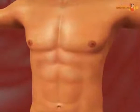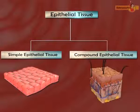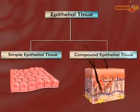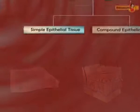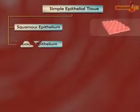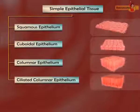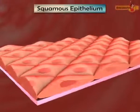Epithelial tissue covers the entire surface of the body. On the basis of number of layers, epithelial tissue is broadly classified into simple epithelium and compound epithelium. Simple epithelium has a single layer of cells, while compound epithelium has more than one layer of cells. On the basis of structural modification of cells, simple epithelium is further classified into five types: squamous epithelium, cuboidal epithelium, columnar epithelium, ciliated columnar epithelium, and pseudostratified epithelium.